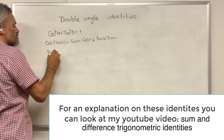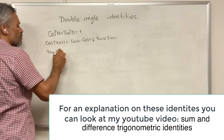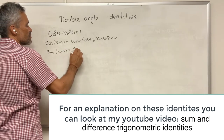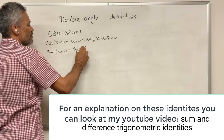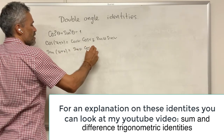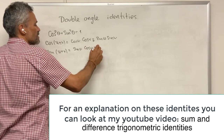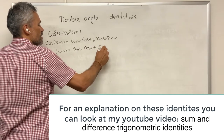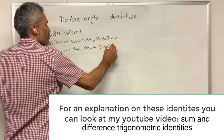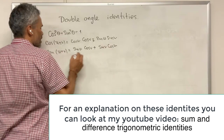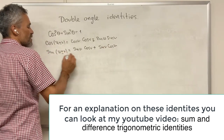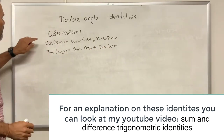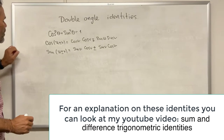Also, sine of u plus v is equal to sine of u cosine of v plus sine of v cosine of u. And if you have a negative here, you need to have a negative here too.